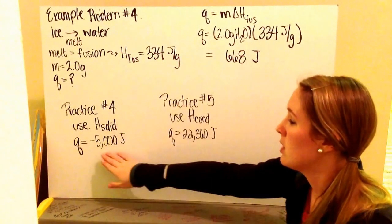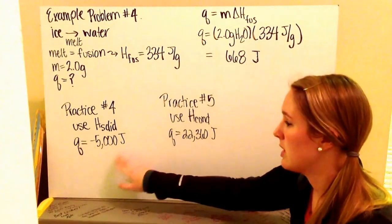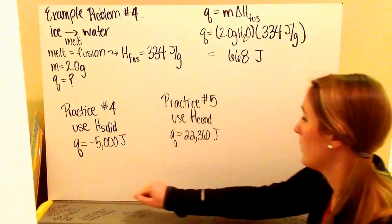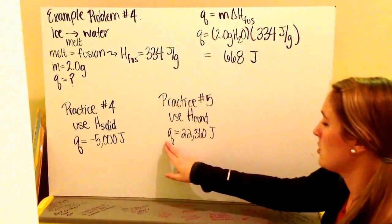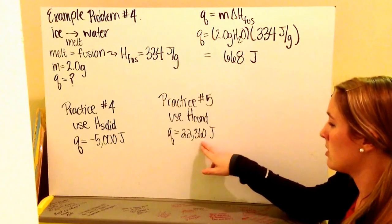For practice number 4, you should have gotten the answer of negative 5,000 joules. It's exothermic. For practice problem number 5, you should have gotten Q equals 22,360 joules.